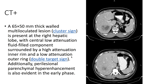On CT, we see a multi-loculated lesion which represents the cluster sign, present at the right hepatic lobe. We see that there's central low attenuation with high attenuation within the inner rim and low attenuation in the outer rim. This is the double target sign.